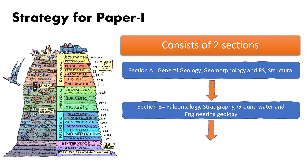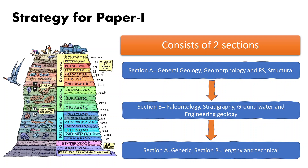Topics from section A comprise all the basic topics which overlap with general studies paper one on physical geography, so you will find ample material to prepare and the questions are generic in nature. However, topics from section B like paleontology and stratigraphy tend to be more technical, lengthy, and require memorization of many facts. Hence it is recommended to attempt three questions from section A and two from section B, inclusive of the compulsory questions, to minimize the chances of going wrong in the final paper.